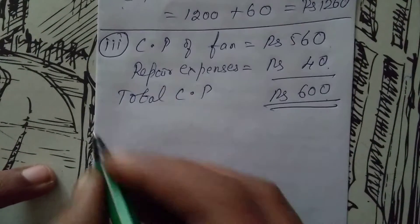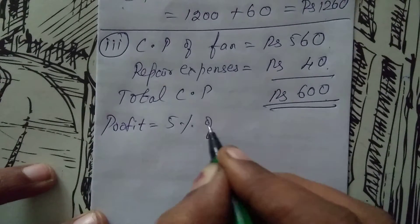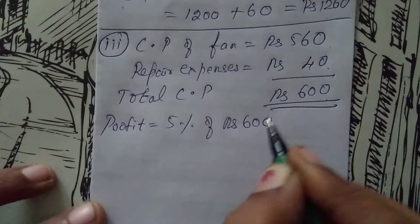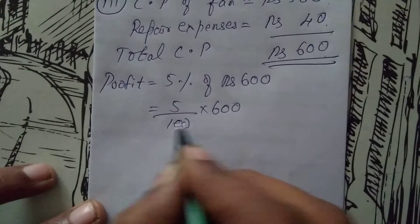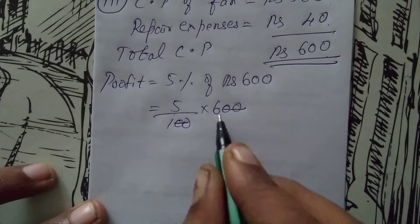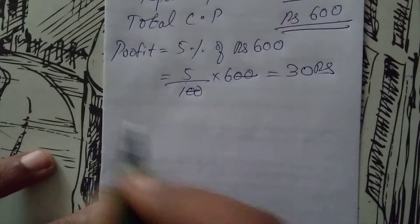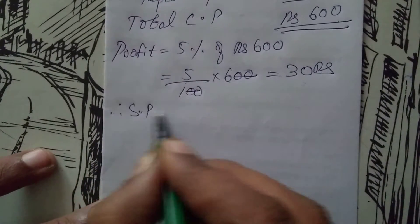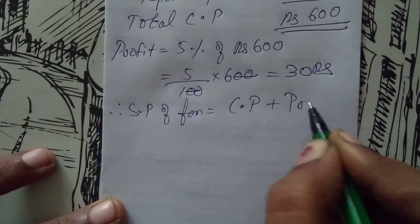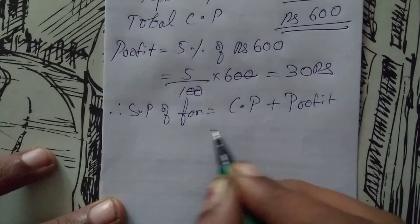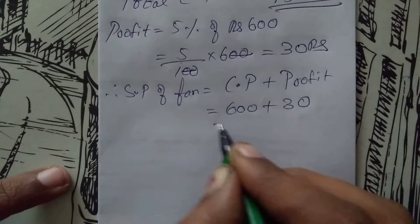Profit given is 5% of rupees 600, that is 5/100 into 600. Two zeros get cancelled; 5 sixes are 30. Profit is rupees 30. Therefore selling price of fan is cost price plus profit: 600 plus 30 equals rupees 630.